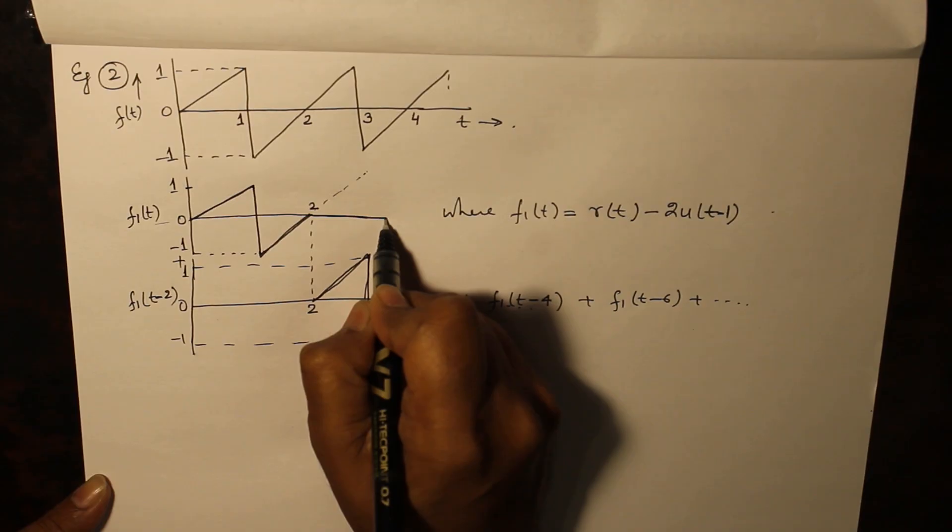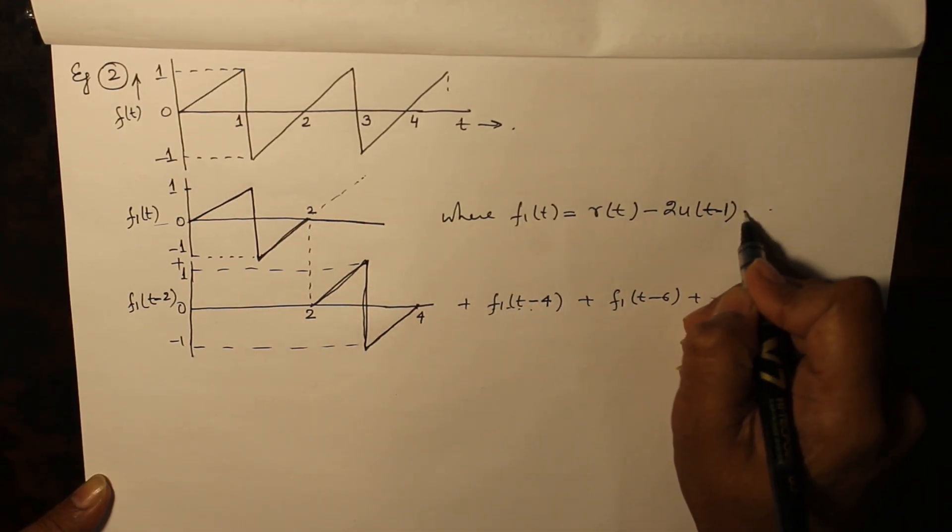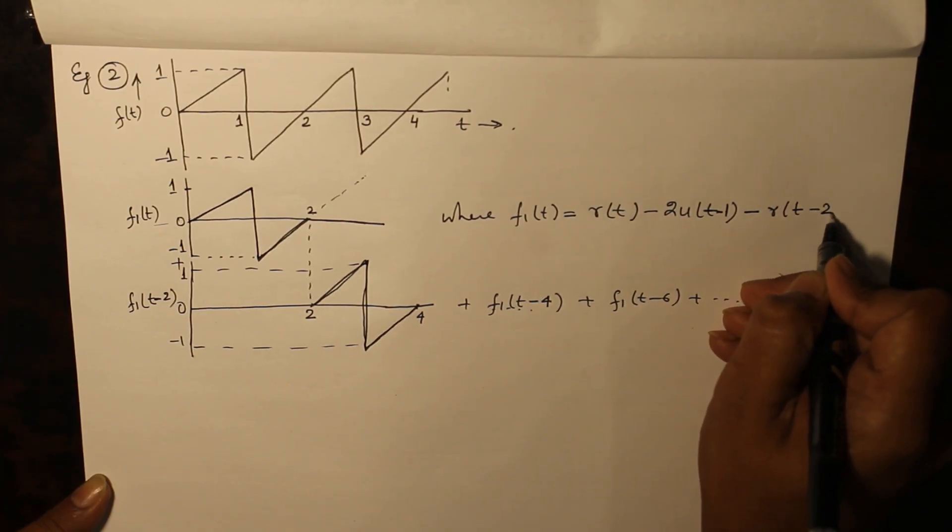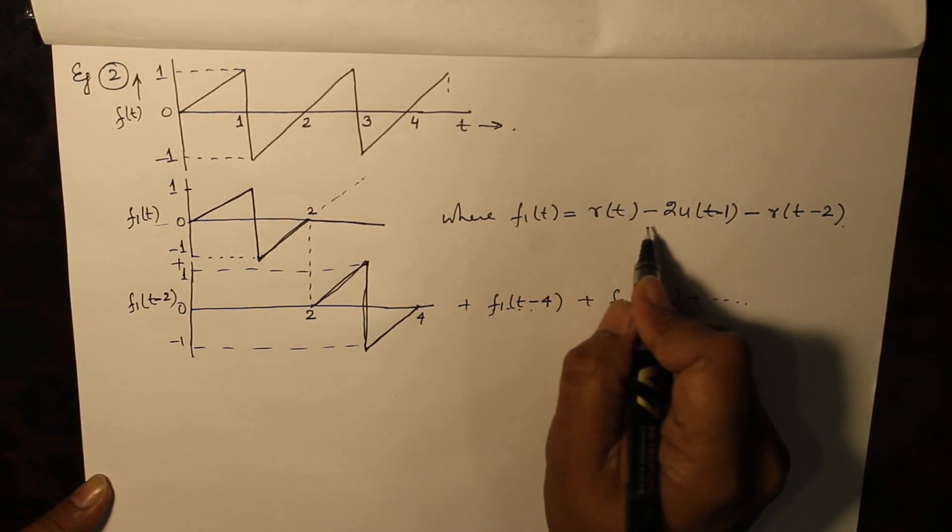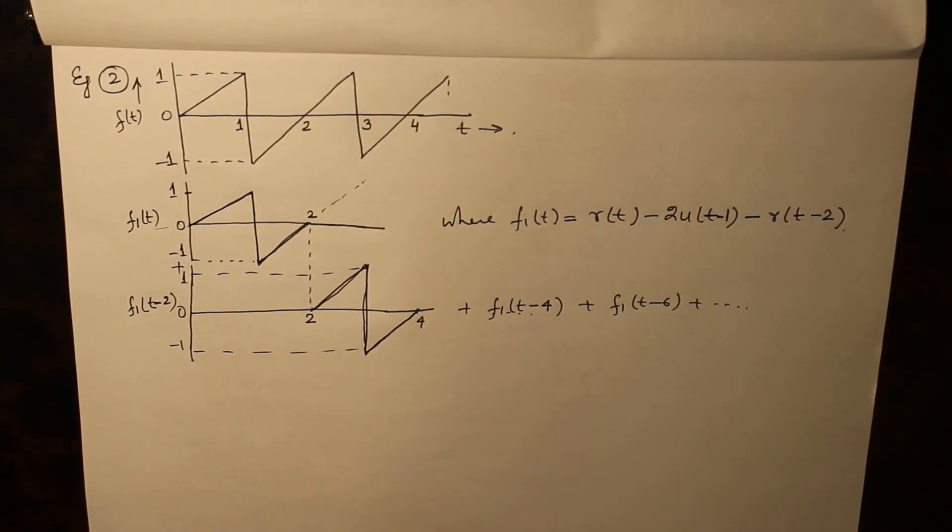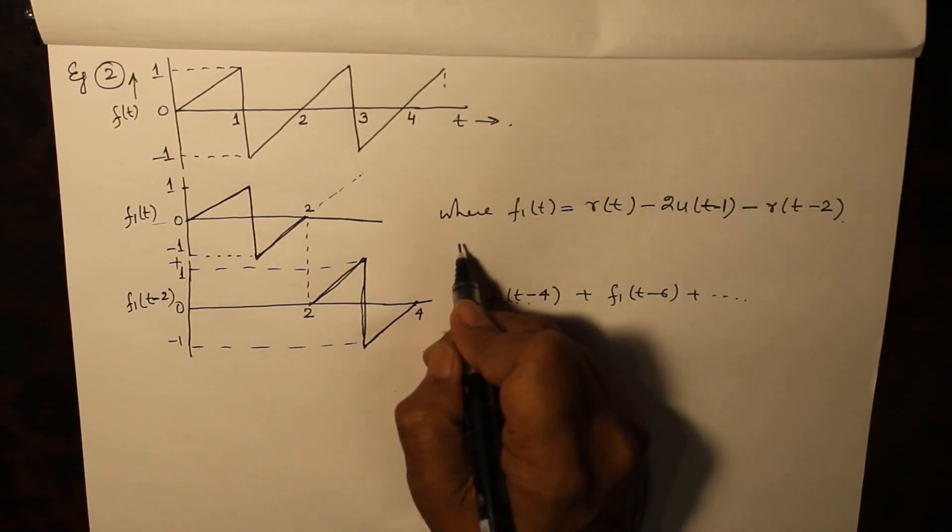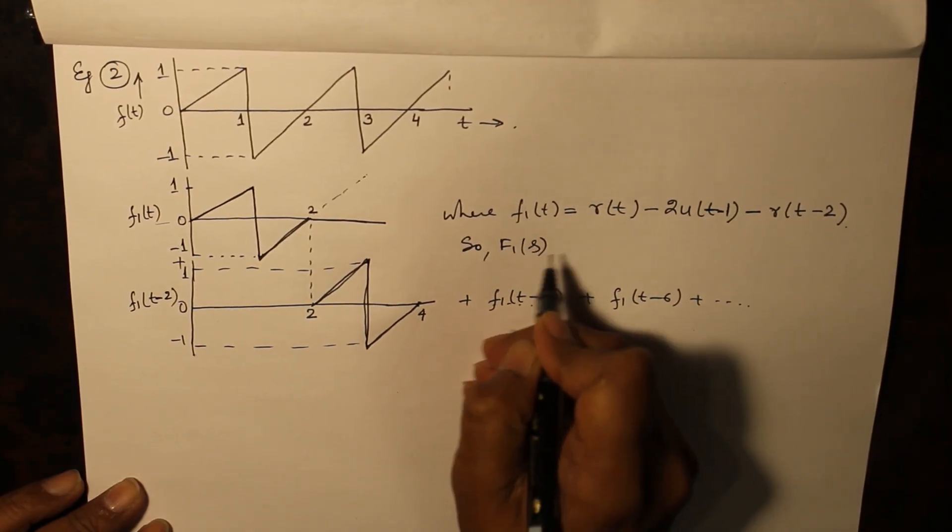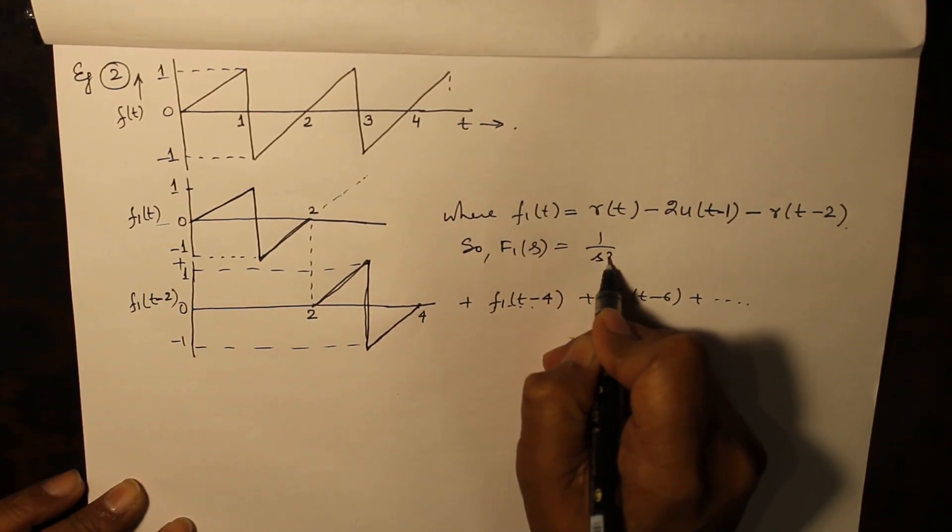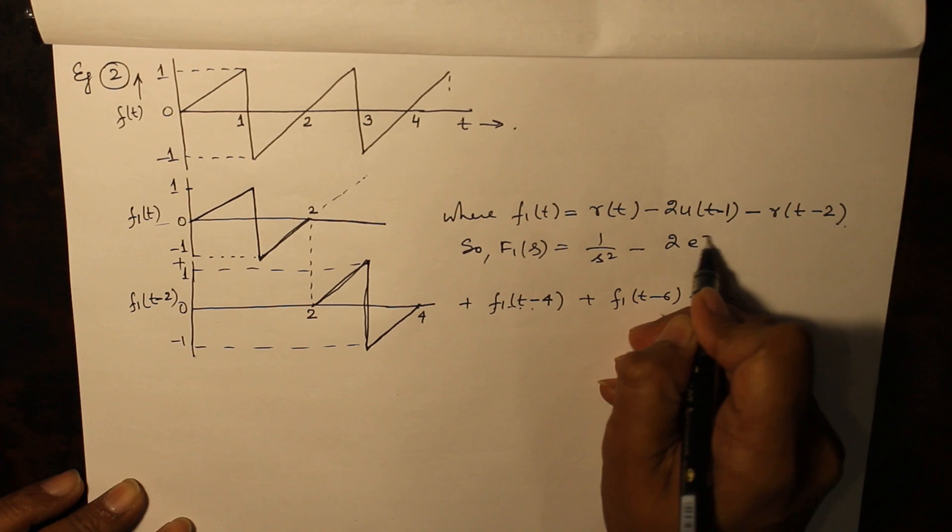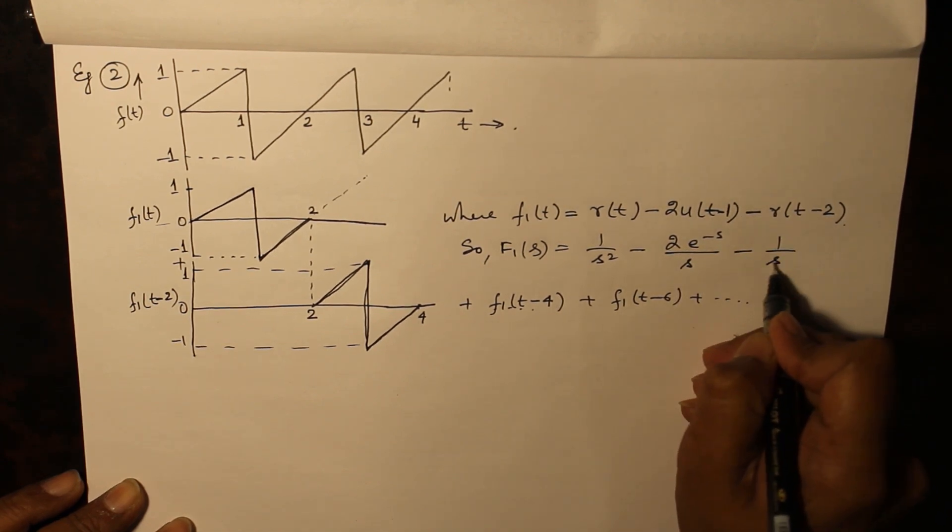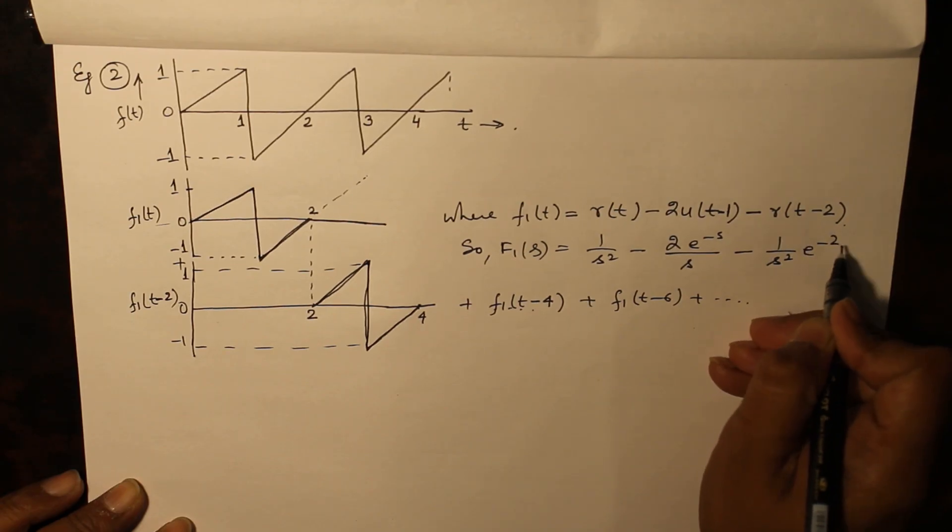Thereafter this waveform is continuing, but we want 0. So here we will subtract another waveform at t equals 2, and this will give you f1(t). So f1(s) can be found as 1 over s squared minus 2e raised to the power minus s over s minus 1 over s squared times e raised to the power minus 2s.